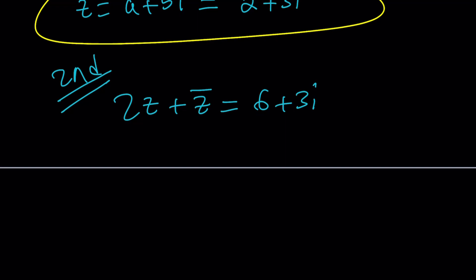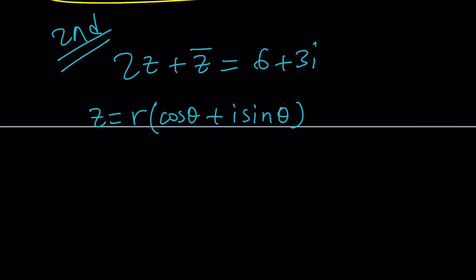So we can write Z as r times cosine theta plus i sine theta. And then we can go ahead and find Z bar from here. Z bar is just going to change the theta to negative theta and sine is going to be negative.